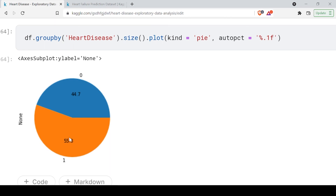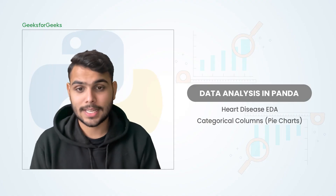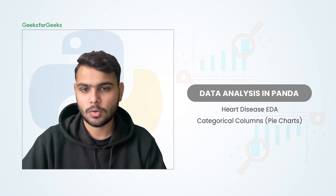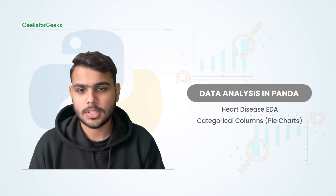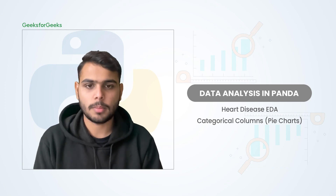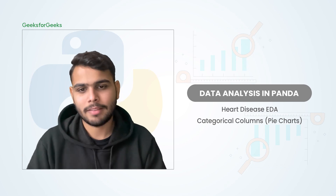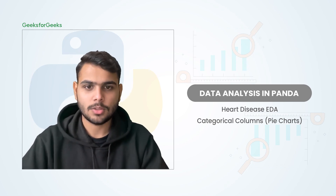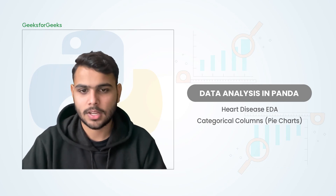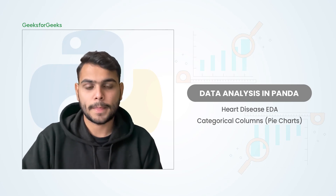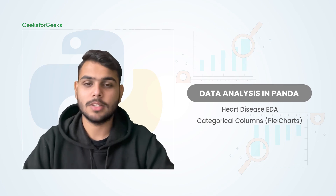We have done very basic analysis taking one column at a time. In the next lecture we are going to discuss how to find correlation, make heatmaps, and make pair plots. To summarize this lecture: we discussed how to work with pie charts for the heart failure dataset. For binary outcomes like heart disease, two categories work great with pie charts. For chest pain with five types it also works well. But if you have 100 or 200 categories, pie charts won't work and you'll need another approach.